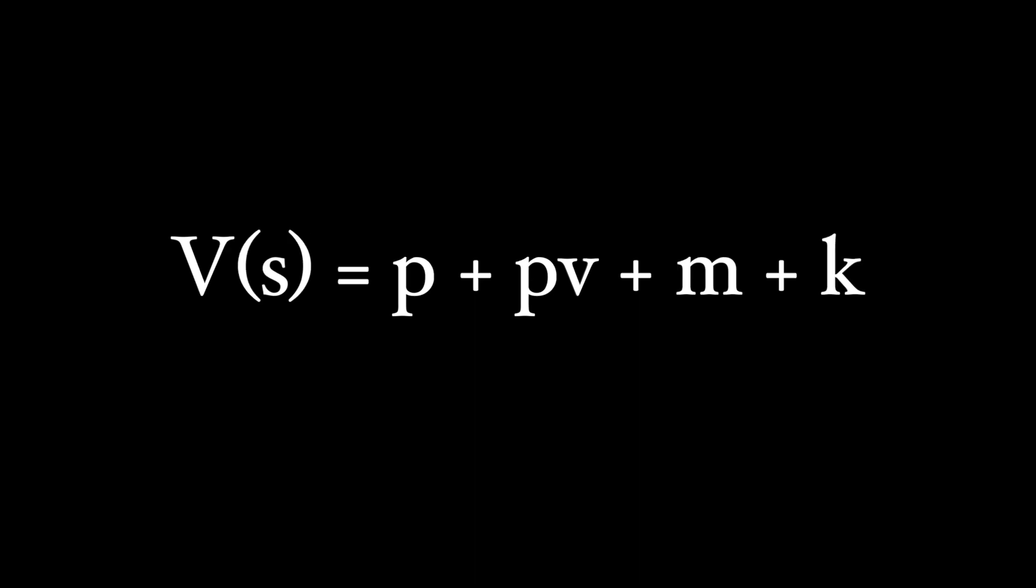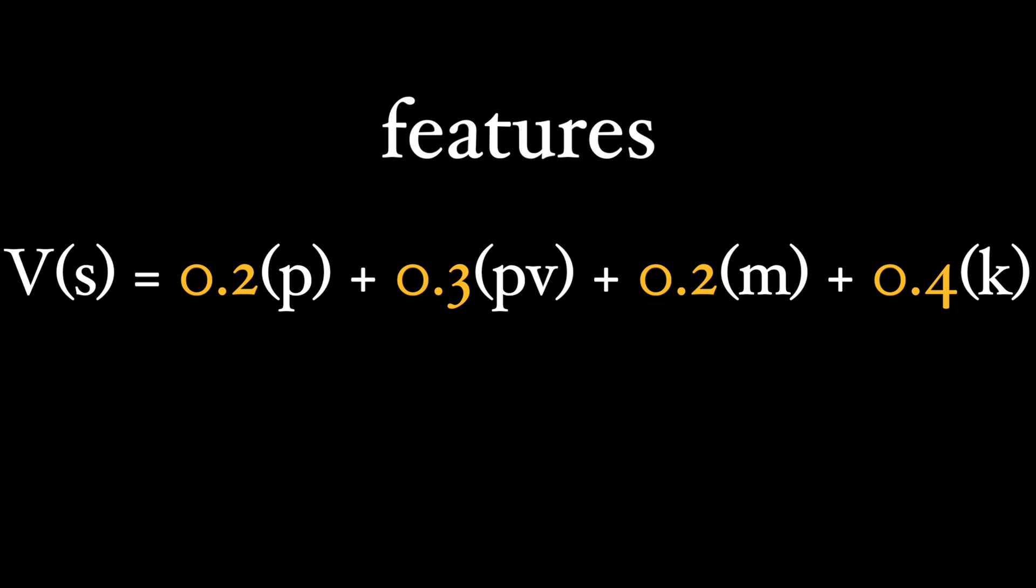To create a value function, Shannon started with some well-known chess rules. For example, piece count—having more pieces is better. Piece value—a queen is better than a pawn. Mobility—more mobility to move your piece, the better. How exposed your king is—less exposed is better. Each of these we call features, and together they can define an equation which gives different importance or weights to each feature.